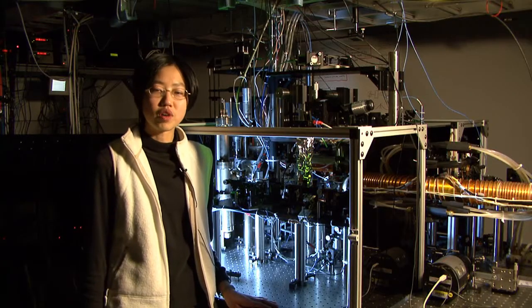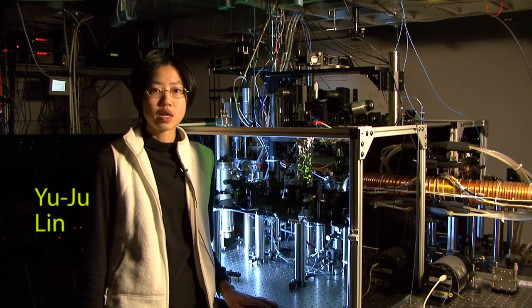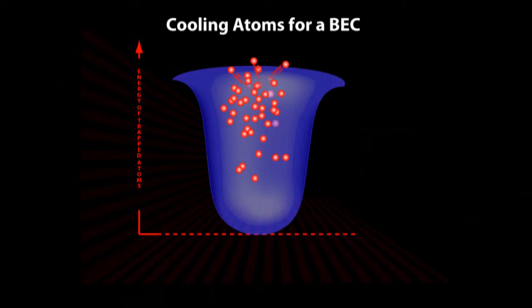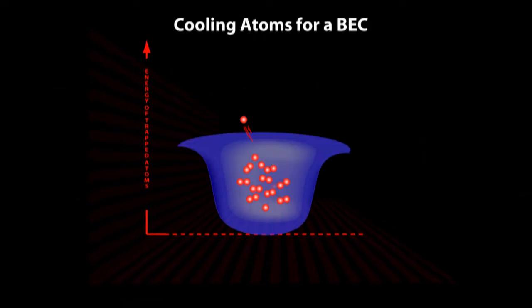After pre-cooling from the laser beams, we turn them off and leave only the magnetic trap on. We do further cooling by reducing the depth of the trap so that hot atoms can leave and the remaining atoms can rethermalize and cool down. We do this cooling process first in a magnetic trap, then transfer into an optical trap.